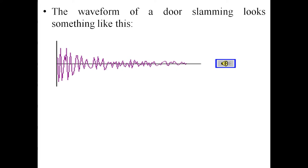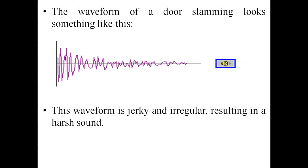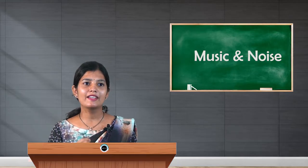The waveform of a door slamming looks something like this. We can observe that when a door is suddenly slammed or shut, the waveform is irregular — jerky and irregular — and this results in a very harsh sound. That is why when a door is slammed suddenly we hear a harsh sound.